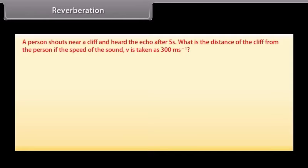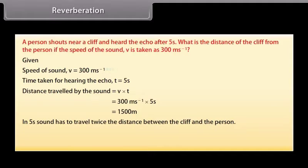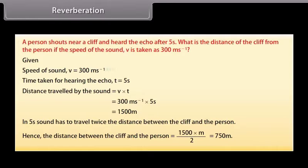Let's now solve a problem. A person shouts near a cliff and hears the echo after five seconds. What is the distance of the cliff from the person if the speed of the sound v is taken as 300 meters per second? Given that the speed of sound v is 300 meters per second, time taken for hearing the echo t is five seconds. Distance traveled by the sound is equal to v into t, which is equal to 300 meters per second into five seconds, is equal to 1500 meters. In five seconds, sound has to travel twice the distance between the cliff and the person. Hence, the distance between the cliff and the person is 1500 meters by two, that is 750 meters.